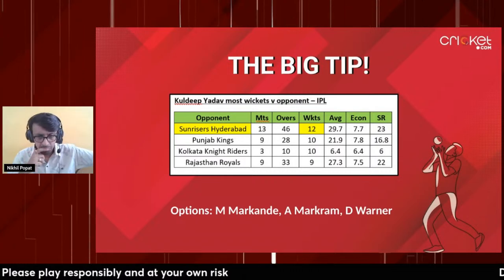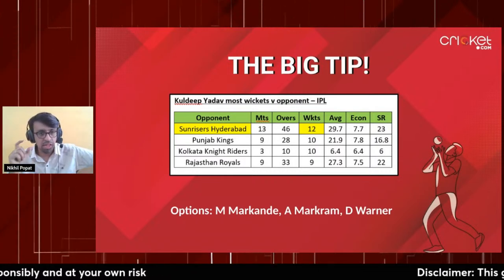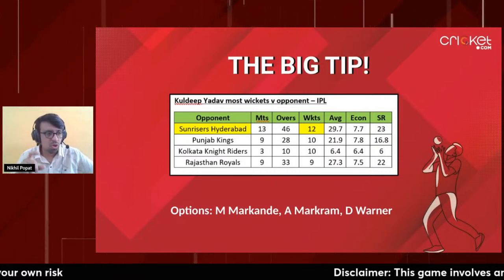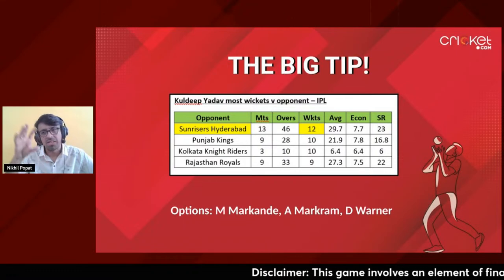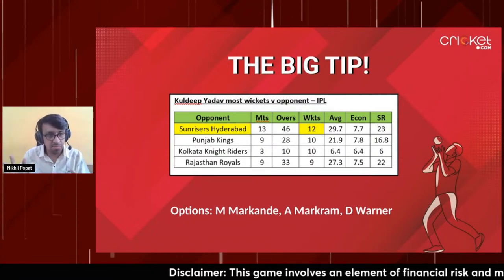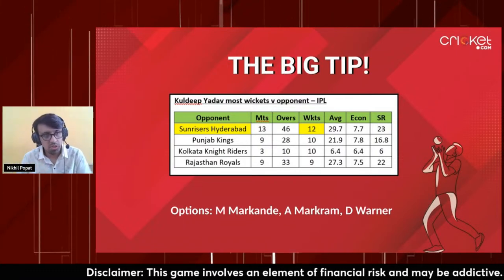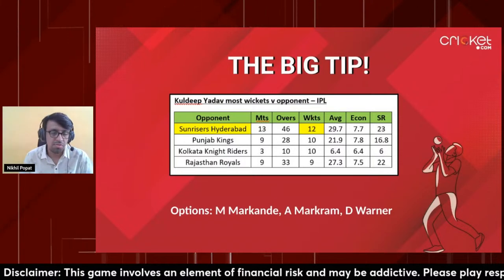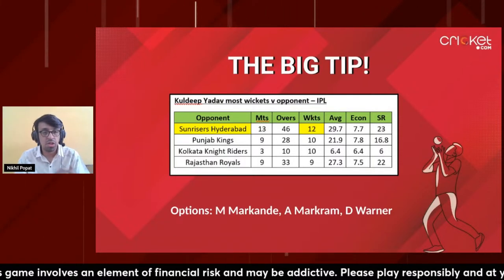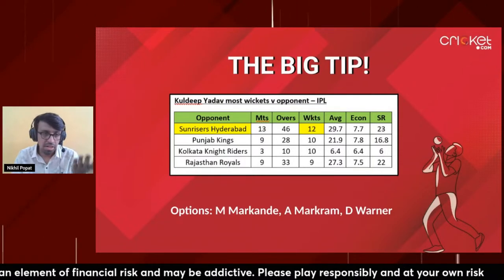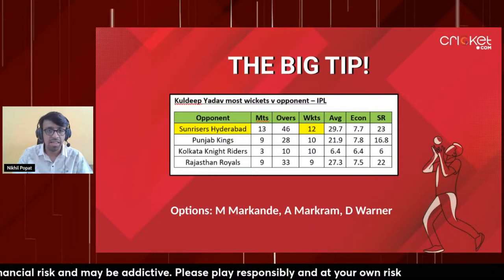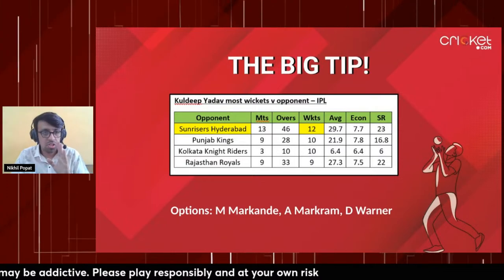Aiden Markram: if you think openers go early or Klaasen doesn't have a great game, Markram will steady them with a 50-60. And David Warner - if you feel he'll play and do well against his former franchise, please go ahead and back him. Always back your visualization. That was the data and tips I wanted to share - now let's take a few comments.